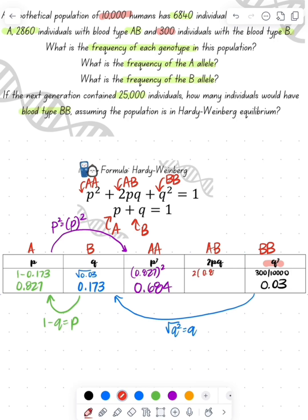Now to find the 2PQ, I multiply 2 times my P times my Q value, which will give me 0.286.